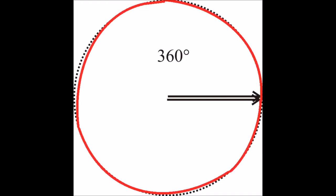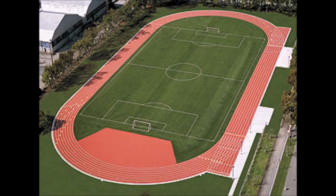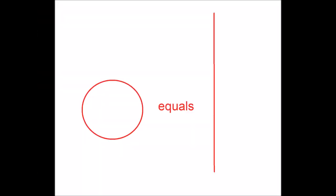If you unwind the circle into a straight line, the length of that line is called the circumference. Just like a track, the length of a circle appears longer in a straight line, even though it is the exact same length.